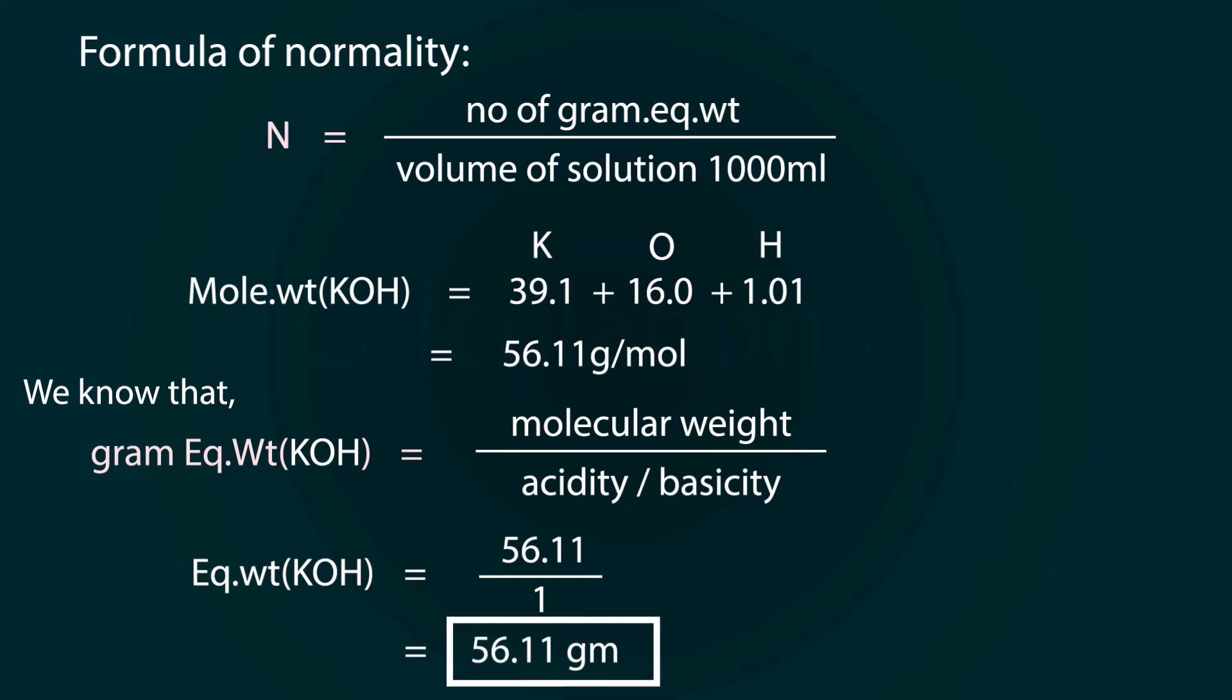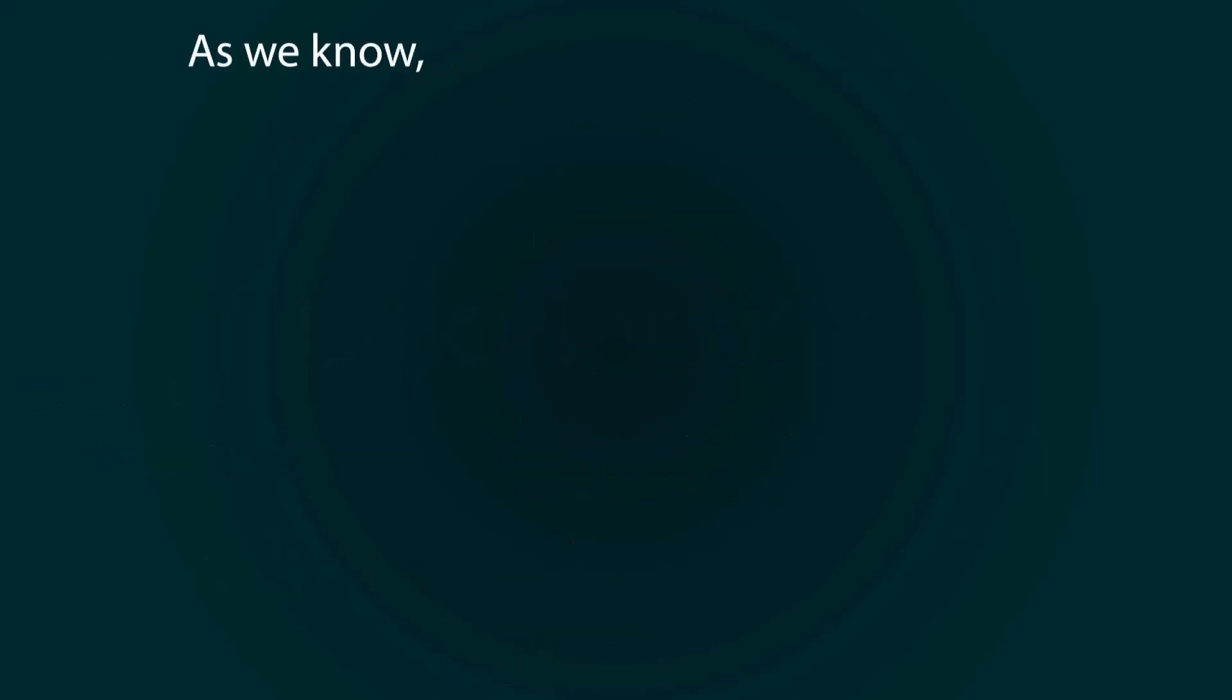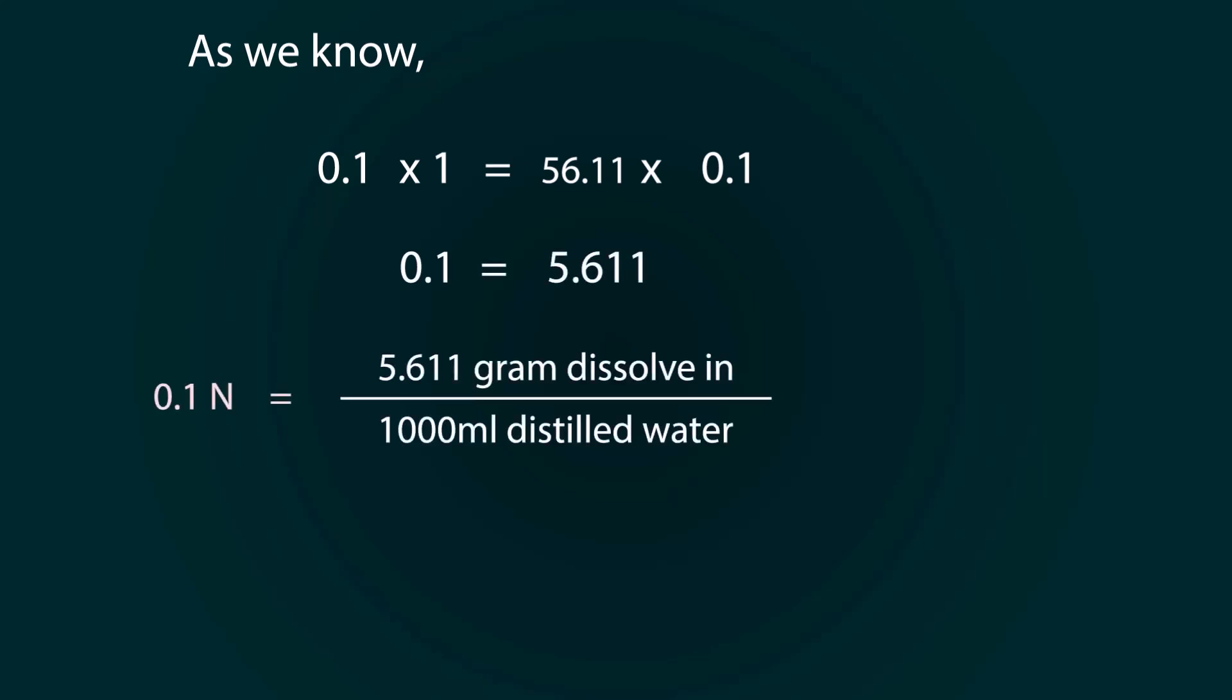We know that we required 56.11 grams for 1 normal, but we have to find out 0.1 normal. So multiply 0.1 on both sides for 0.1 normal solution. We have to add 5.6 grams of potassium hydroxide.